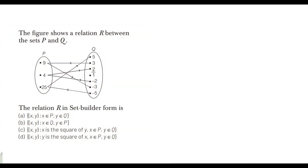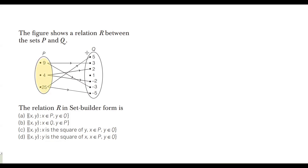The next question uses the same arrow diagram but asks for the set builder form of the relation. Looking at the elements: 9 is the square of 5 and -5, 4 is the square of 2 and -2, and 25 is the square of 5. So the first set element is the square of the second set element.